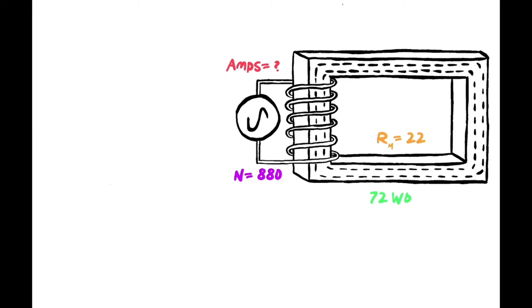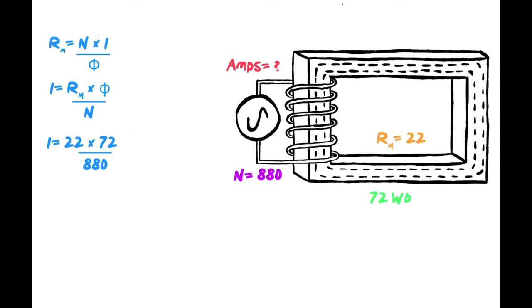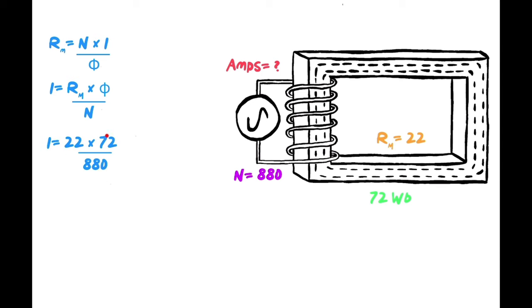Let's figure this one out. We're going to do it again except this time we have the number of turns but we don't have the amps. So we start with the formula: Rm equals N times I over phi, or Fm over phi, same thing. We move this around a little bit and we get I equals the reluctance times the phi divided by N. All I did was transpose to get I alone. So I equals 22 times 72 divided by 880. Boom, I equals 1.8 amps.